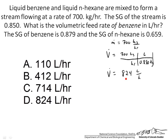We expect that we will have a number that is reasonably close to 800, so more than halfway to 824 liters per hour for the volumetric flow rate of benzene. So C is the only answer that really meets those criteria.